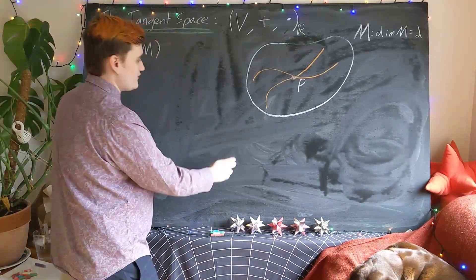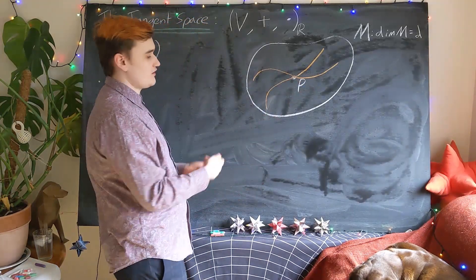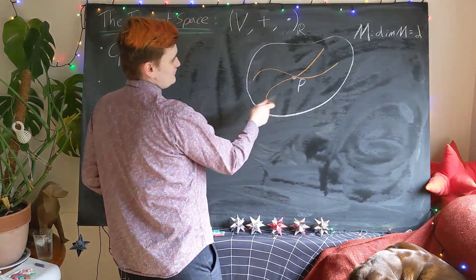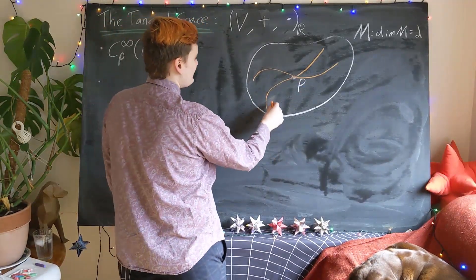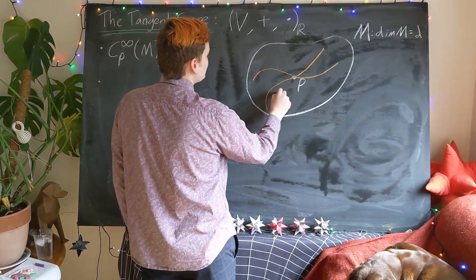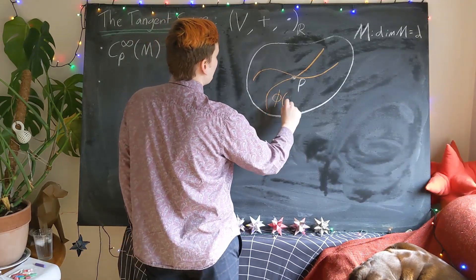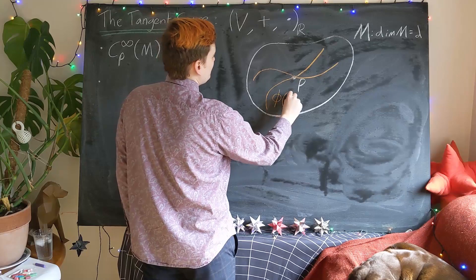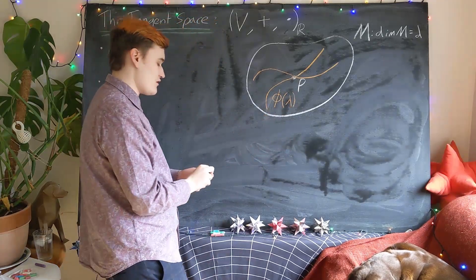So each of these curves we usually think of as being parametrized in terms of some parameter. So if I call each curve phi, it's just going to be some function of a real parameter.